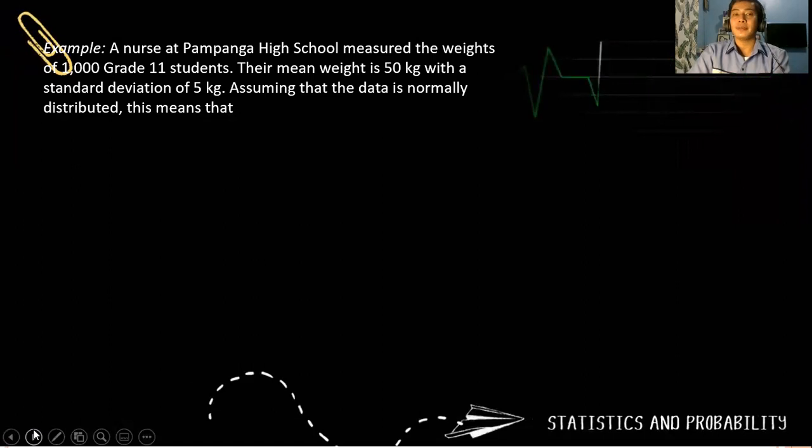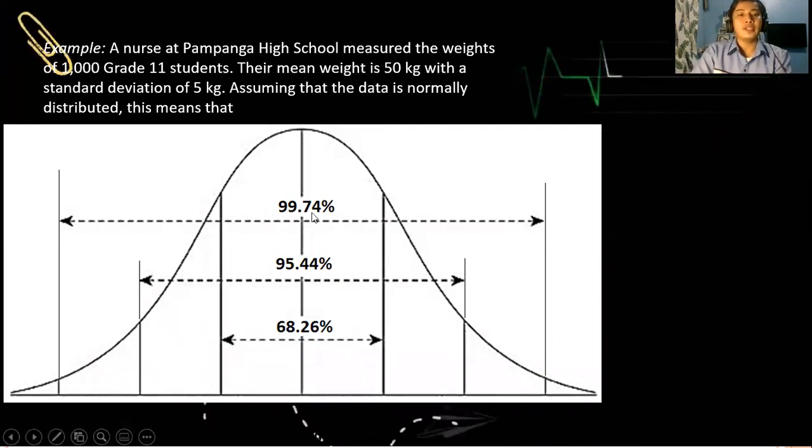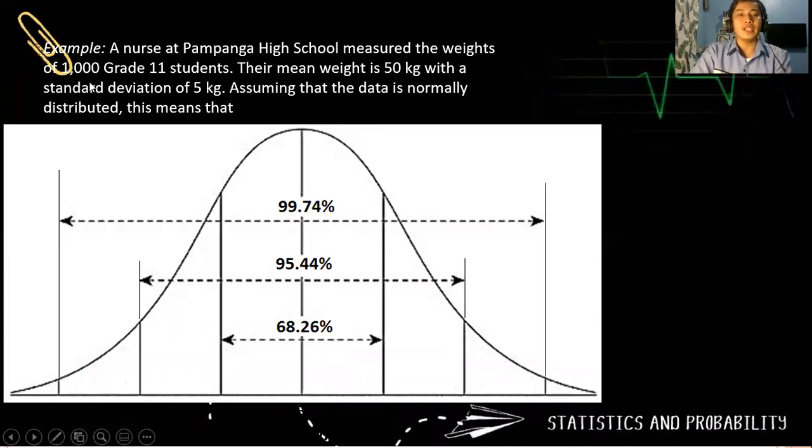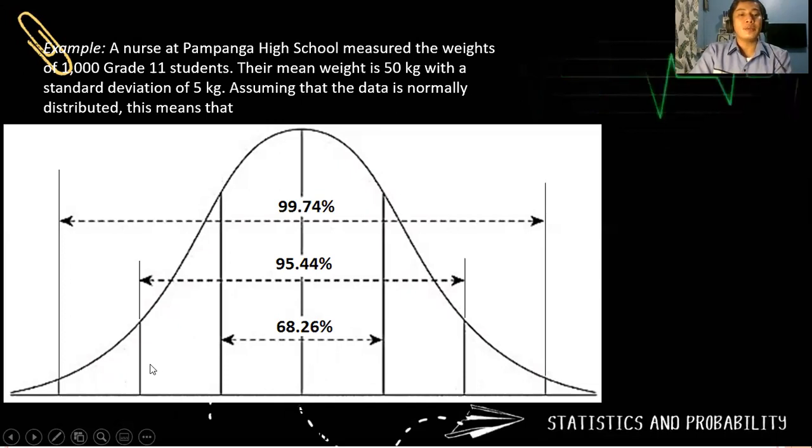So let us proceed. Let's have an example. A nurse in Pampanga High School measured the weight of 1,000 grade 11 students. Their mean weight is 50 kilograms with a standard deviation of 5 kilograms. So assuming that the data is normally distributed, this means that 99.74% times 1,000.